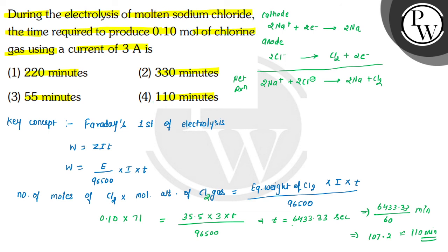So the time required to produce 0.10 mol of chlorine gas using a current of 3 ampere is 110 minutes, which is given in option 4. Hence option 4 will be the correct choice for this question. Hope you understood it well. All the best and thank you.